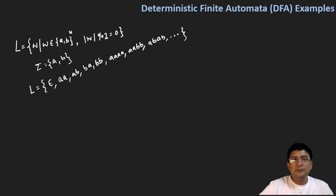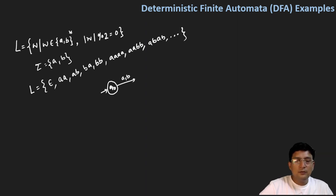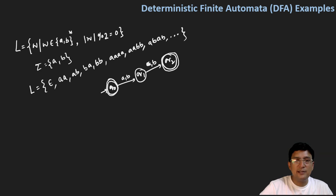The automata possible for this: let's say q0 is the start state. On getting a symbol A or B, you will reach q1. Again on getting A or B, you move to q2. Since the zero-length string is acceptable, q0 should be the final state, and since the two-length string is also acceptable, q2 should also be a final state.